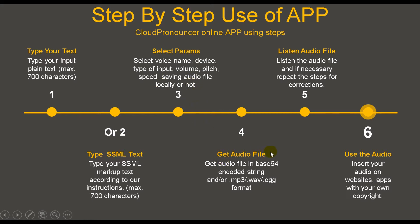Get the audio file as a Base64 encoded string and/or in MP3, WAV, or OGG format. Listen to the audio file and, if necessary, repeat the steps for corrections. Then use the audio file — insert your audio on websites or apps with your own copyright.